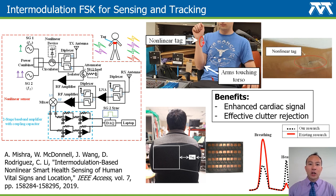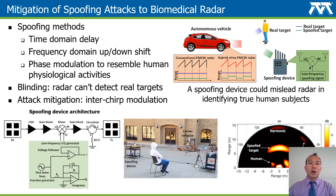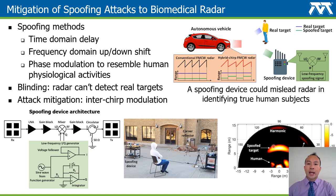Smart radars are becoming ubiquitous in modern life for applications in transportation, healthcare, IoT, and human computer interface. To provide reliable service, their security is of paramount importance. This talk will present possible ways of malicious attacks based on time, phase, and frequency spoofing of radar signals. Furthermore, we will discuss technologies that mitigate potential attacks to make radar sensors more secure and trustworthy. For example, shown on the bottom of this page is a frequency shift based spoofing of FMCW radar to generate a faked target at a certain distance. Methods to identify the spoofed target will be presented.